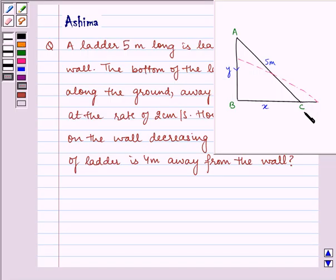Here we can see that as point C moves away from point B, the end A also moves towards B. That is, x is increasing and y is decreasing.